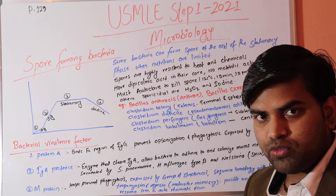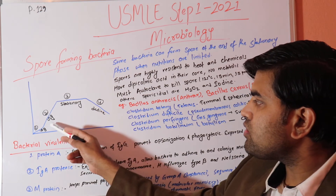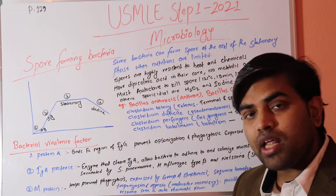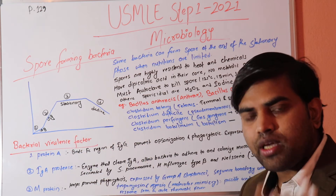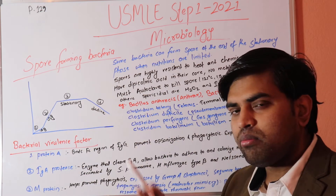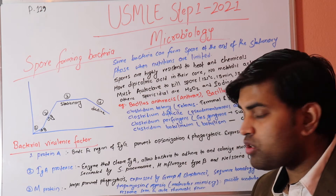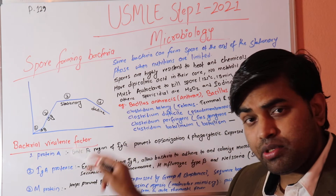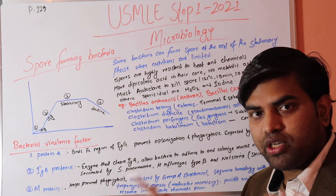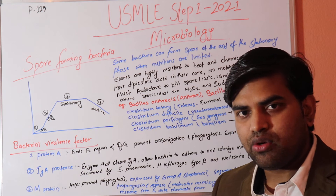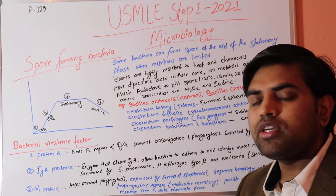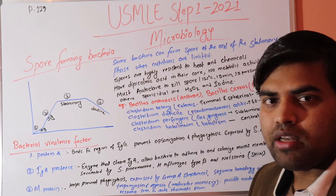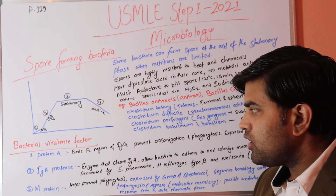In the log phase, bacteria are actively multiplying and forming new peptidoglycan layers. This is when beta-lactam antibiotics — penicillin, cephalosporins, carbapenems, and aztreonam — act. A non-multiplying bacterium will not be killed by penicillin-group antibiotics. At the stationary and decline phases, there is no new peptidoglycan formation, so beta-lactams cannot inhibit transpeptidase enzyme activity.